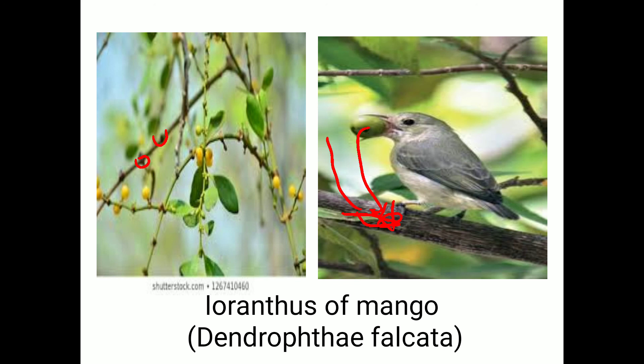For management of Loranthus, apply 0.5 percent glyphosate at the point from where the Loranthus arises. Remove the seeds before multiplication, or remove the parasite from infected branches before flowering using the Amar Loranthus cutter — a special cutter designed by the university for cutting Loranthus branches.